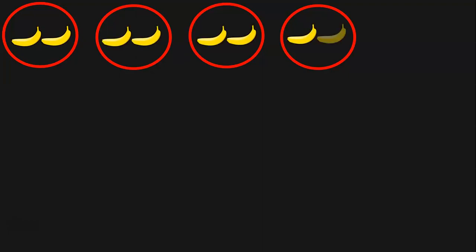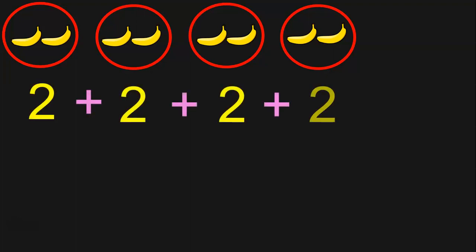Here we have 4 groups, with 2 bananas in each group. What is the total number of bananas? Let us do addition: 2 plus 2 plus 2 plus 2. 2 plus 2 is 4, 4 plus 2 is 6, 6 plus 2 is 8.